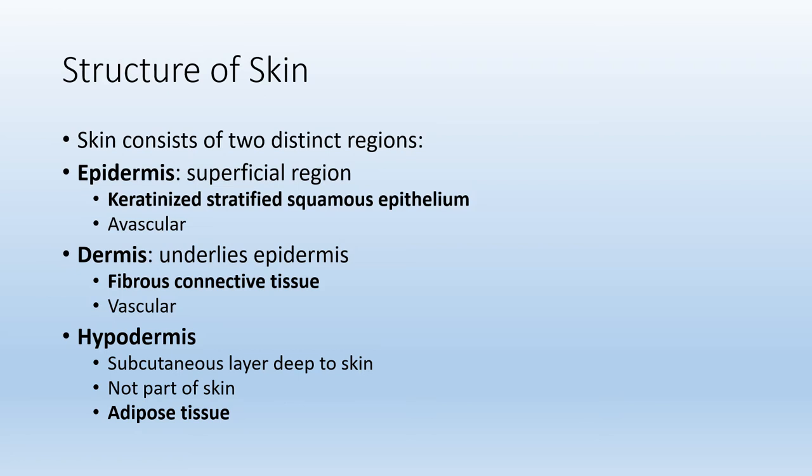These two distinct regions: the more superficial region closer to the surface is the epidermis, which is keratinized stratified squamous epithelium — many layers of flat cells that produce keratin. The epidermis is avascular, without blood supply. Deep to the epidermis we find the dermis, which is connective tissue proper and is highly vascularized. It provides blood supply to the epidermis via diffusion.